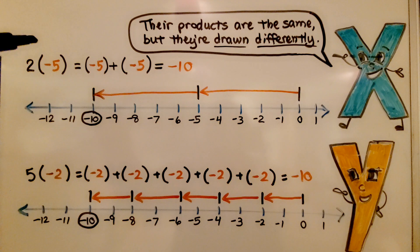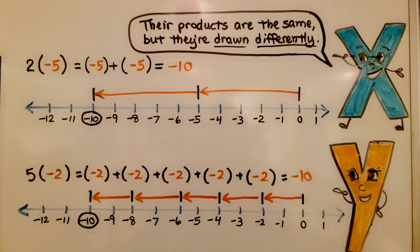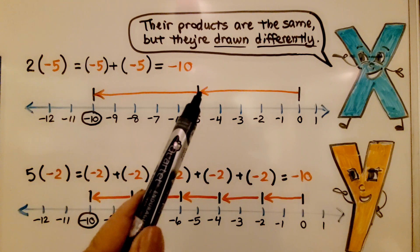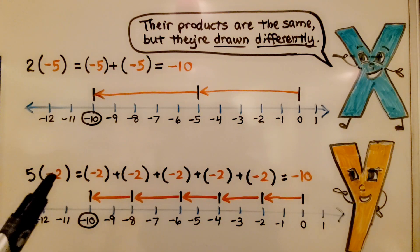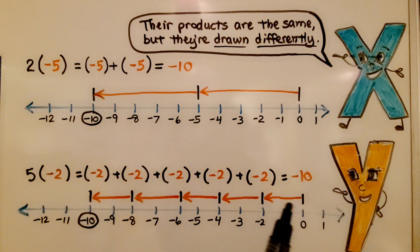Here we have two times negative five, and here we have five times negative two. Their products are the same — both equal negative ten — but they're drawn differently. Two times negative five is two arrows that each go the length of five units towards the negative, bringing us to negative ten. But five times negative two is five arrows heading into the negatives, each the length of two units. Same product, but drawn differently. Be very careful how you draw your number lines and arrows.